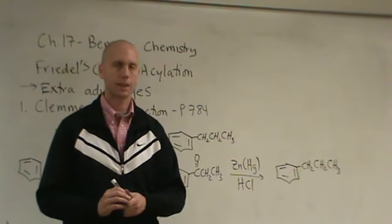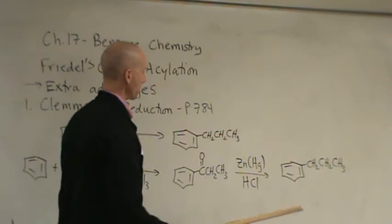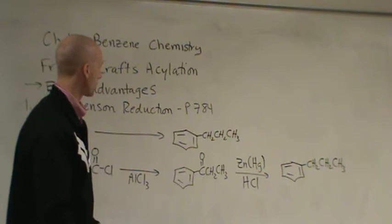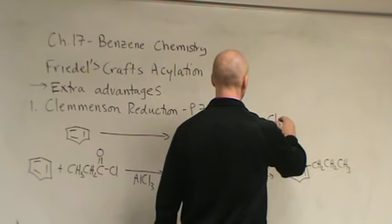What this reaction is going to do, it's going to reduce the carbonyl to a CH2. So, it converts the acyl group to an alkyl group. It's a reduction, isn't it? Because I've gone from a double bond and an oxygen and I've gotten rid of those. This is what's called a Clemmenson reduction.